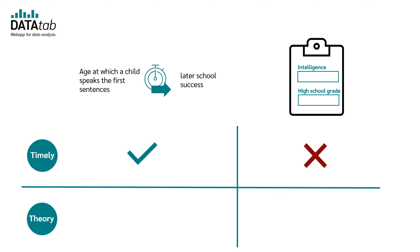On the other hand, if we measure intelligence and the high school average at the same time, we do not have this temporal component. In order to be able to make a statement here, there must be a well-founded theory of which variable influences which. If there is not, no statement about causality can be made.